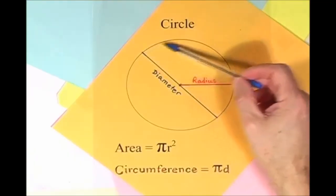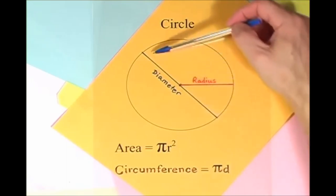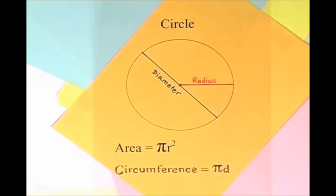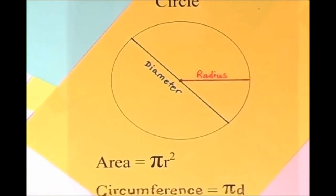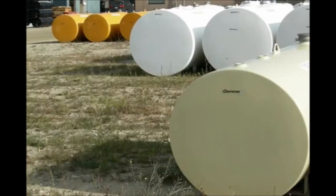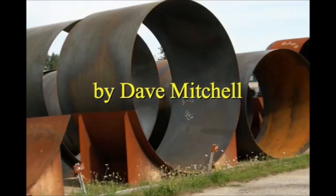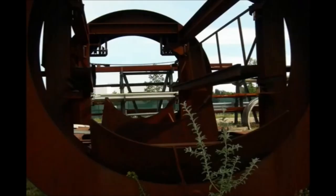Here is a circle, it knows how to get around. It has a radius from center to rim. And its diameter's a line that goes from side to side while passing through the center, now isn't that simple. Pi r squared sounds like area to me, when I need a circumference, I'll just use pi d. Pi r squared sounds like area to me. Here is a circle, it knows how to get around. It has a radius from center to rim.